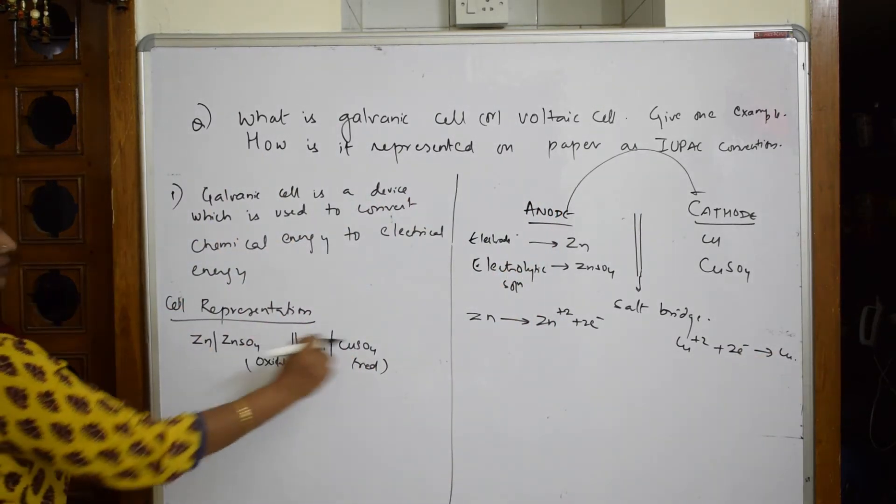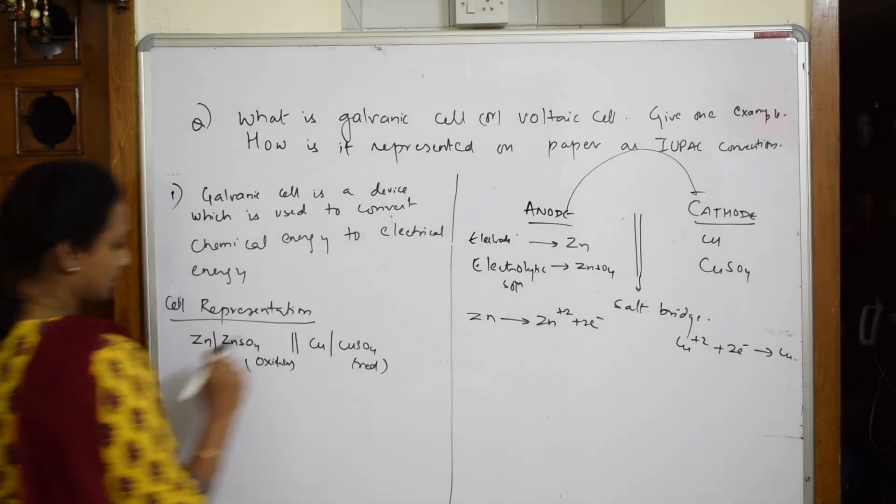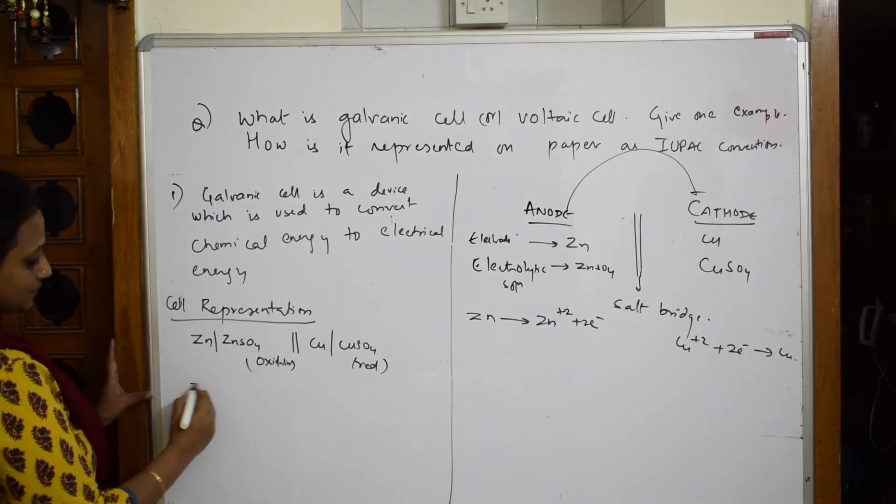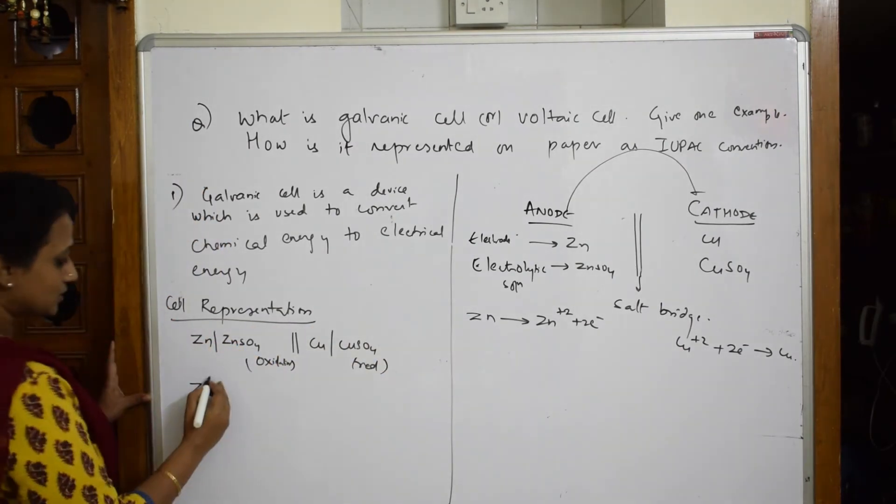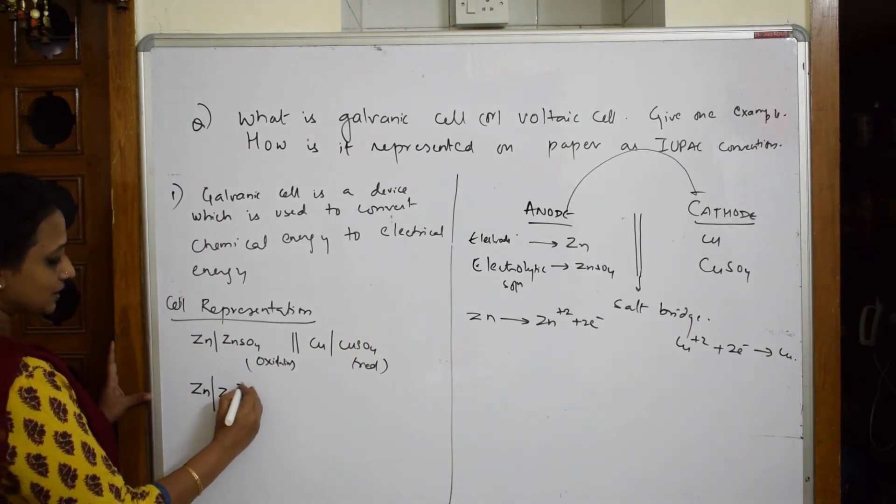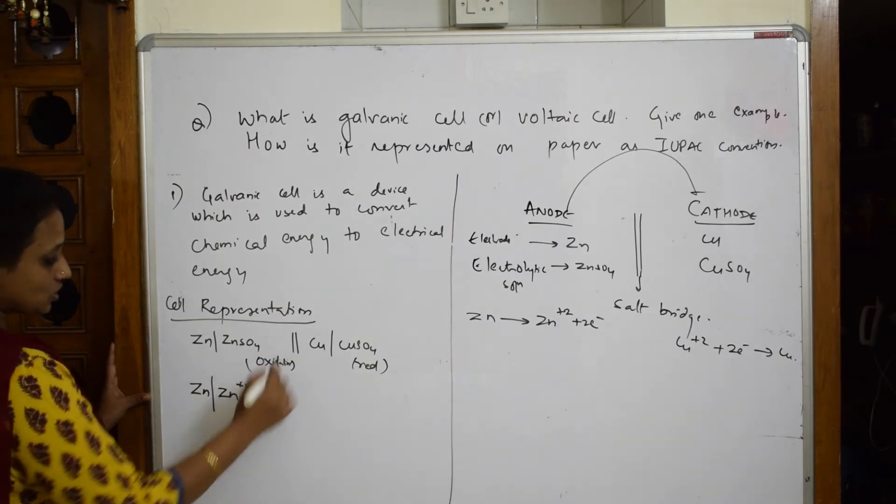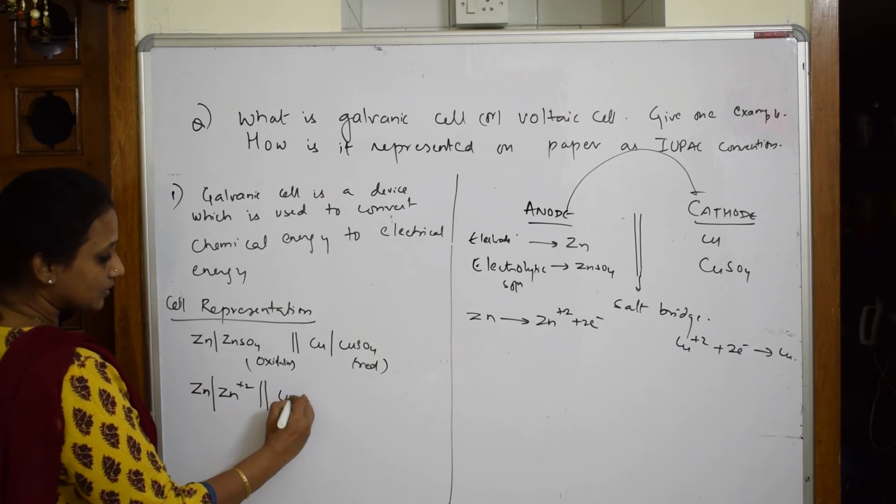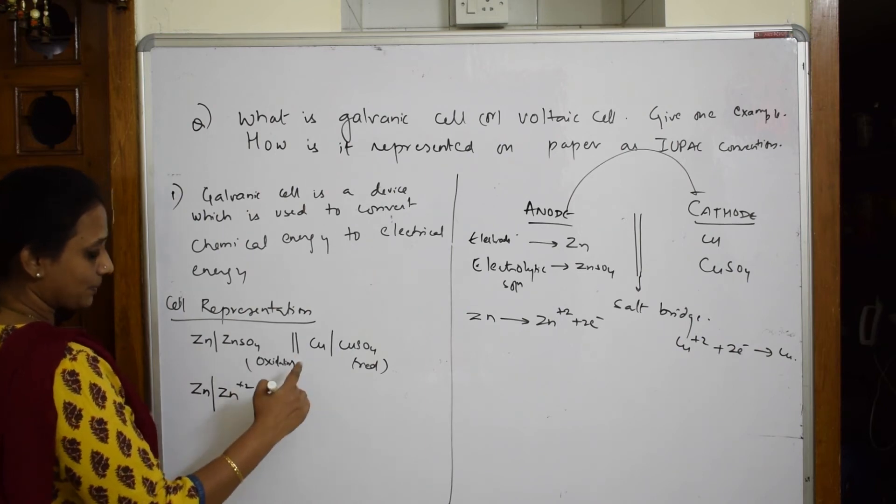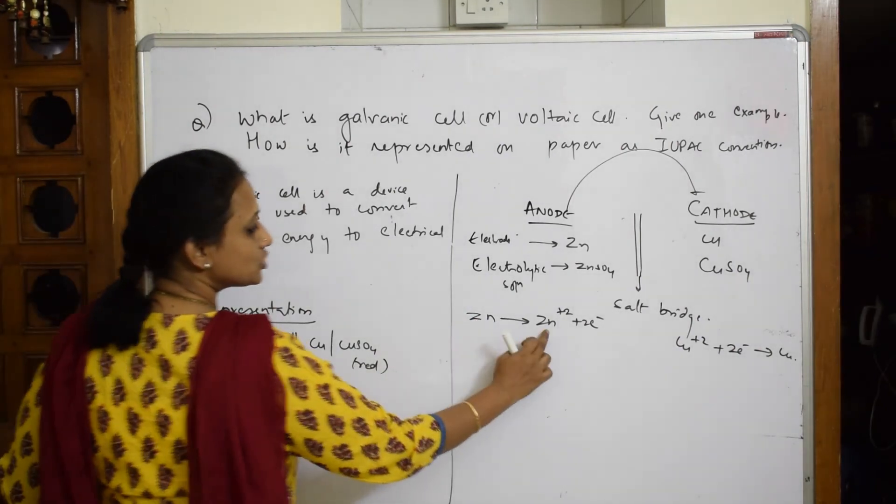Let's write now. Zinc, what ion has it formed? Zinc ion. So write down simple Zn, where did it convert? It converted from zinc to Zn²⁺. Put a line, Zn²⁺. Now salt bridge is already there. Copper, Cu, what happened to copper? From Cu²⁺.